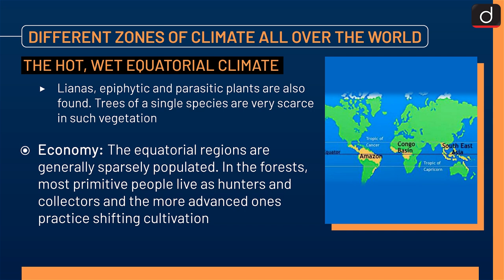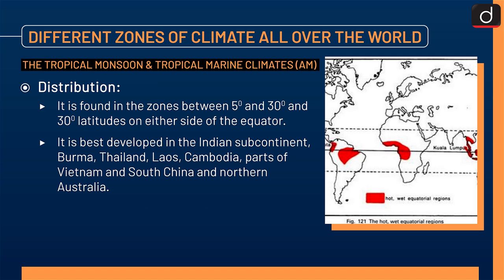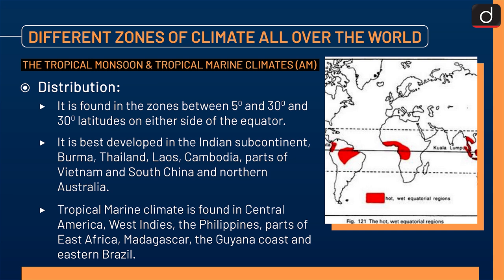The next zone is the Tropical Monsoon and Tropical Marine Climates. Distribution: it is found in the zones between 5 degrees and 30 degrees latitudes on either side of the equator. It is best developed in the Indian subcontinent, Burma, Thailand, Laos, Cambodia, parts of Vietnam and South China, and Northern Australia. Tropical marine climate is found in Central America, West Indies, the Philippines, parts of East Africa, Madagascar, the Guinea Coast, and Eastern Brazil.